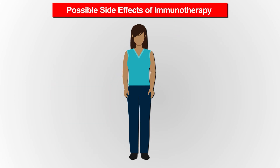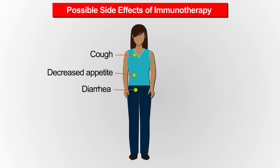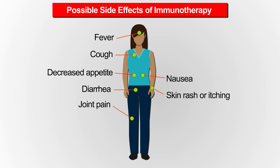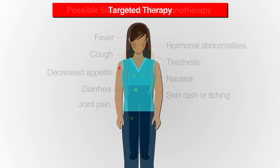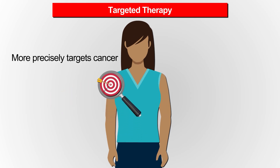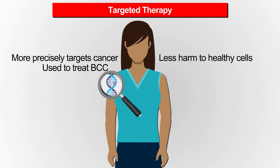Possible side effects of immunotherapy include cough, decreased appetite, diarrhea, fever, joint pain, nausea, skin rash or itching, tiredness, and hormonal abnormalities. Targeted therapy aims to more precisely attack cancer cells, treating cancer with less harm to healthy cells. Targeted therapy drugs are approved to treat advanced basal cell carcinoma — they block a signal in the cells that tells cancer to grow, and are taken in pill form. Targeted therapy drugs are also being studied in other non-melanoma skin cancers and may be available through clinical trials.